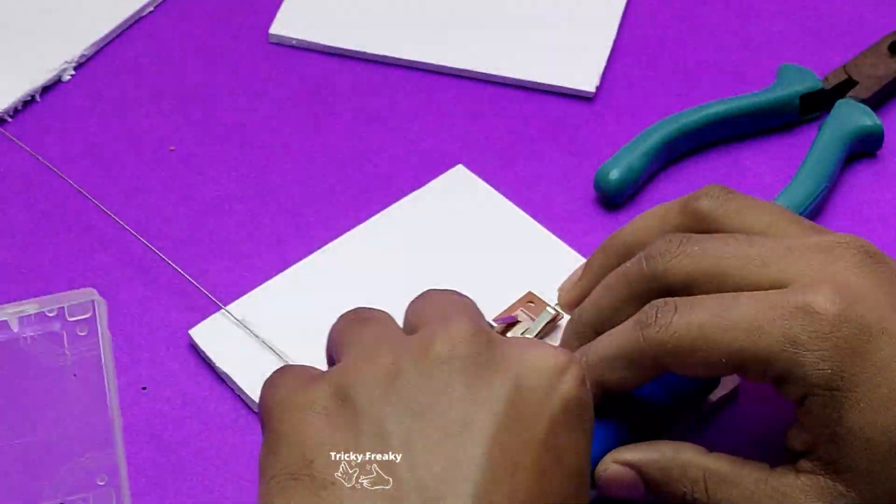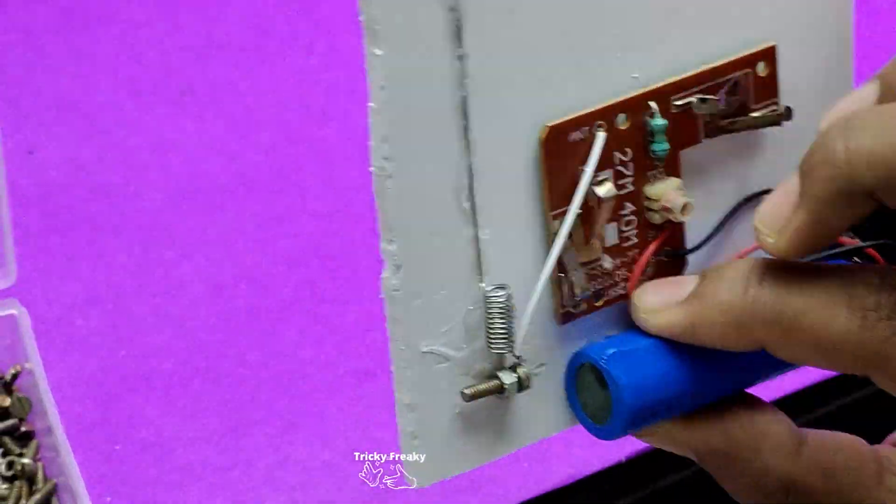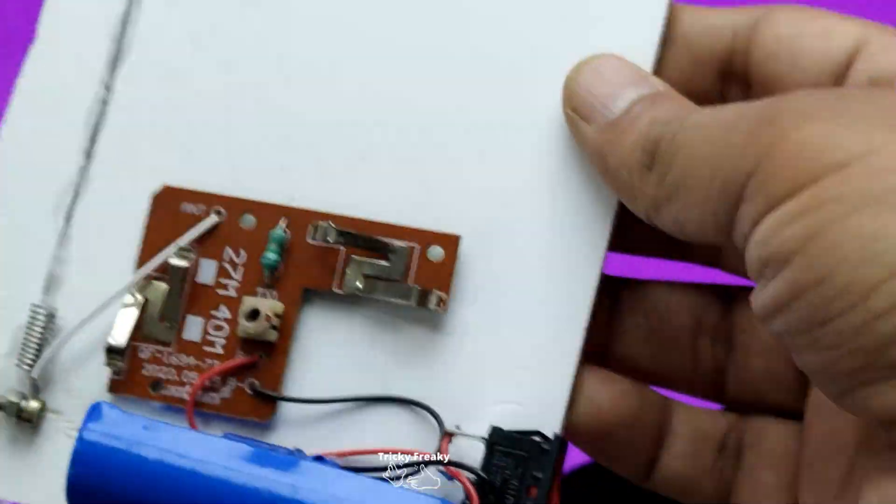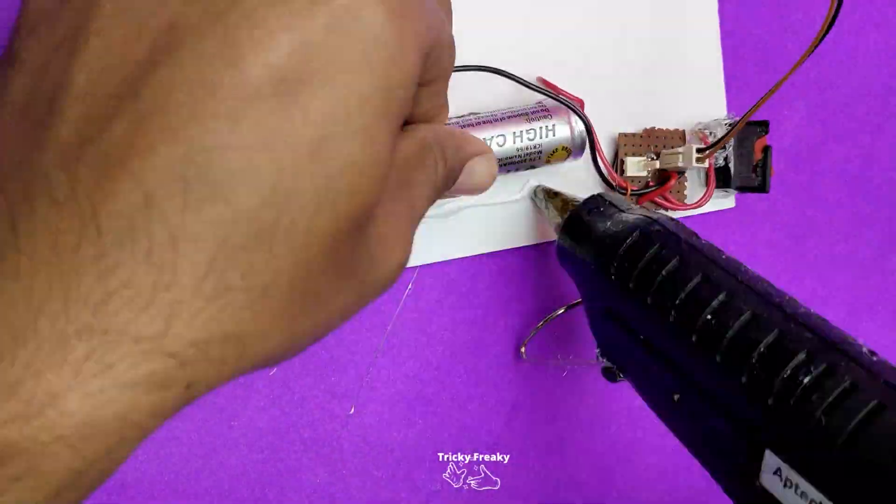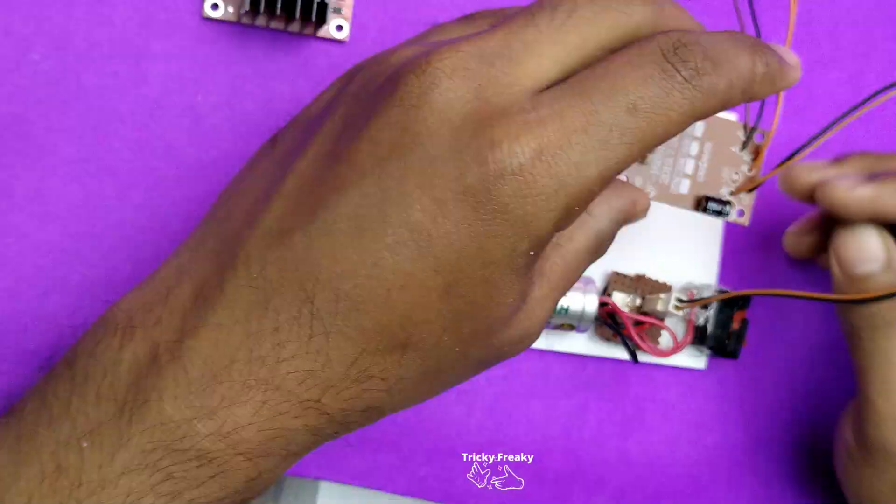See how it looks now? All right, let's attach the receiver board in the same way. Just keep applying the glue.